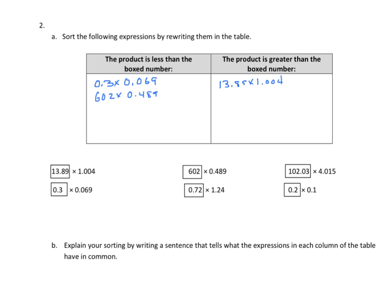Continuing: 72 hundredths times 1 and 24 hundredths — this factor is greater than 1, so it goes in the right-hand box. Then 102 and 3 hundredths times 4 and 15 thousandths — this is much greater than 1, so it also goes in the right-hand box. Last, 2 tenths times 1 tenth — this is less than 1, so it goes in the box on the left. We've now got them all sorted out.